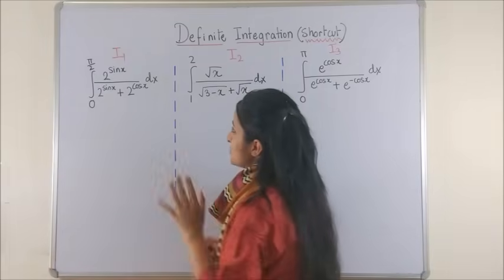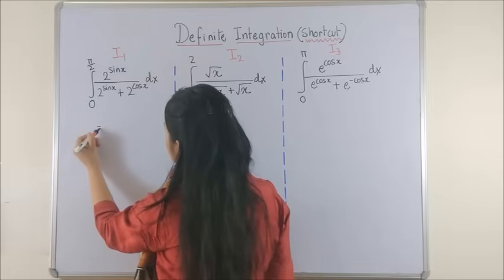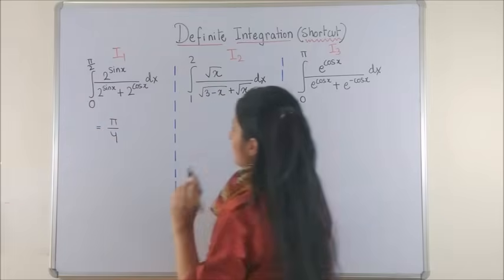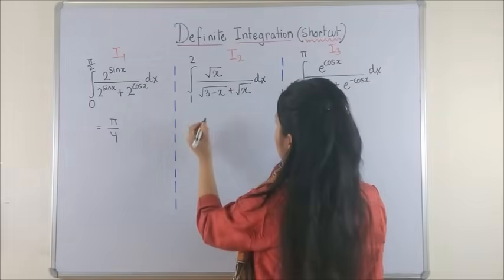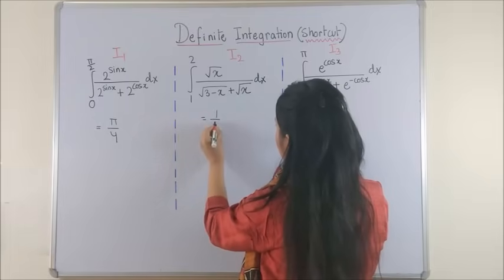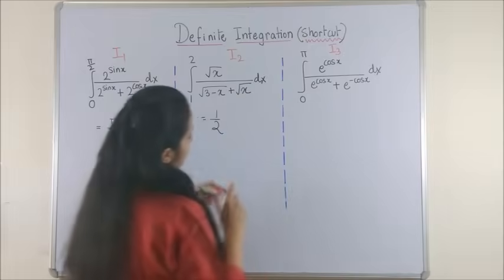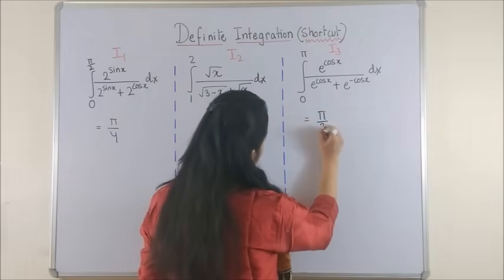The answer to I1 would be pi by 4. The answer to I2 would be 1 by 2. And the answer to I3 should be pi by 2.